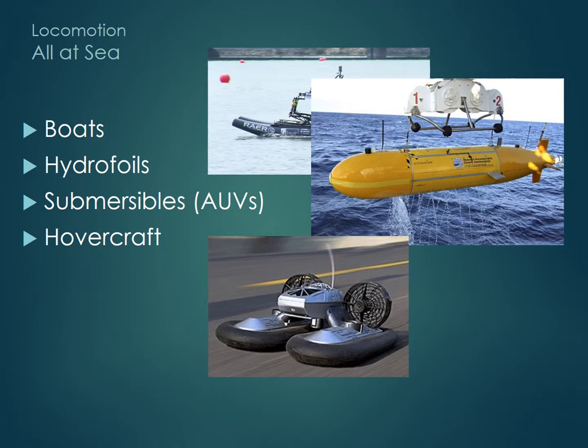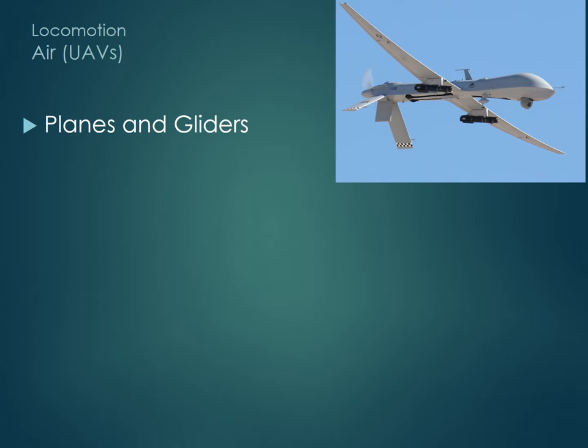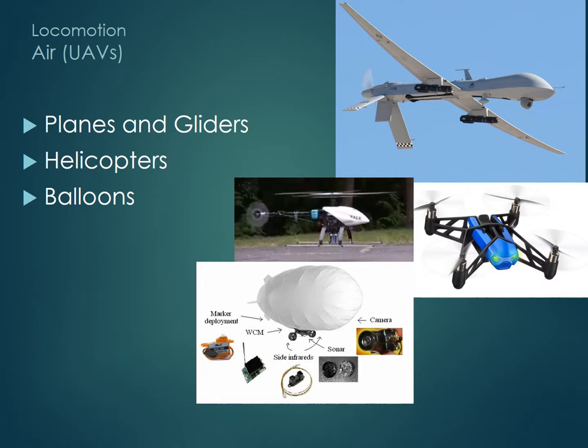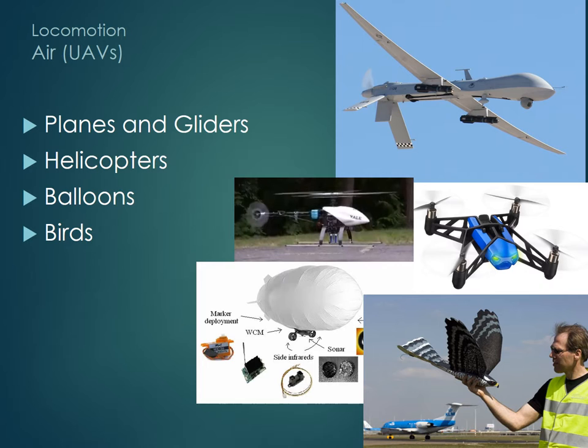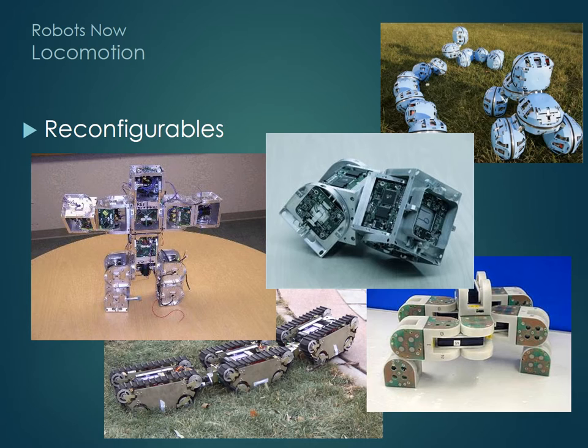Submersibles are particularly popular for exploration and remote working in a hostile environment. And all manner of unmanned aerial vehicles are ideal for surveillance, although flapping birds — going back to Architas — are a bit inefficient at present, but a fascinating imitation study. And finally, there's a lot of work going on in reconfigurable designs, where basic modules can organise themselves into appropriate forms for the task in hand.